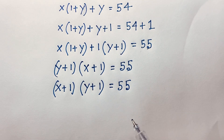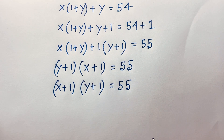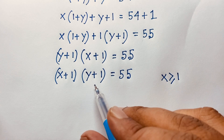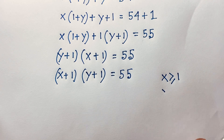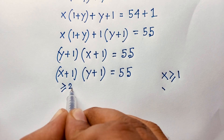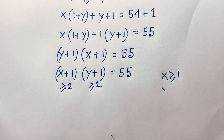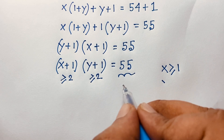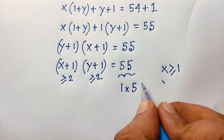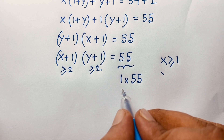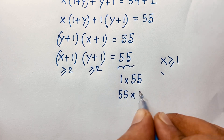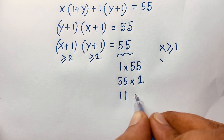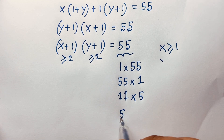We know x and y are positive integers, so x is greater than or equal to 1 and y is greater than or equal to 1. Now 55 can be factored as: 1 times 55, 55 times 1, 11 times 5, or 5 times 11.